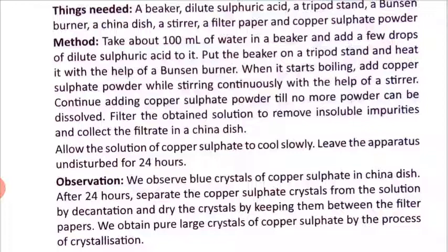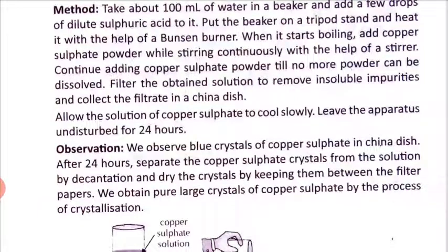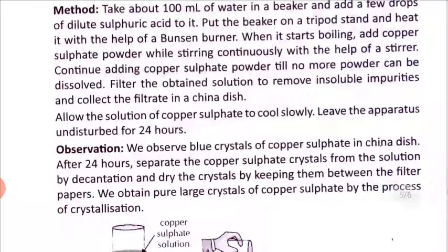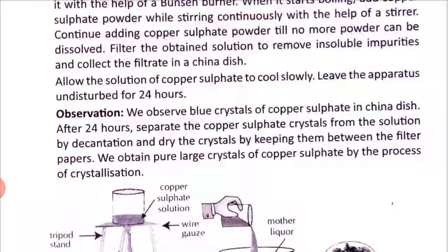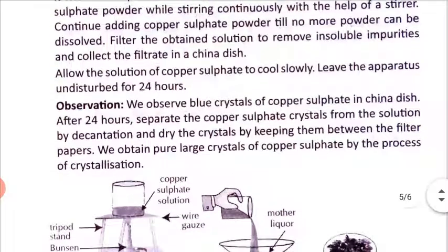When the water starts boiling, add copper sulfate powder while stirring continuously with the help of a stirrer. Continue adding copper sulfate powder until no more powder can be dissolved. Filter the obtained solution to remove insoluble impurities and collect the filtrate in a china dish. Allow the solution of copper sulfate to cool slowly and leave the apparatus undisturbed for 24 hours.